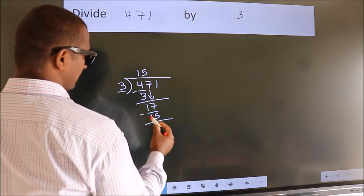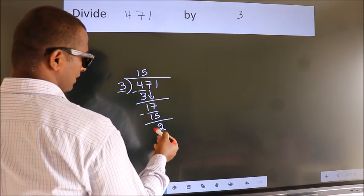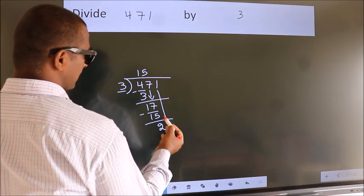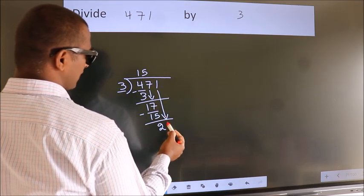Now, we subtract. We get 2. After this, bring down the beside number. So, 1 down.